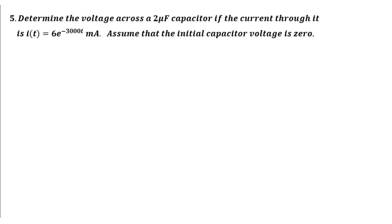Now let's solve question five. Determine the voltage across a two microfarad capacitor if the current through it is I of t equals six times e to the power negative 3000 t milliamperes, and then assume that the initial capacitor voltage is zero.